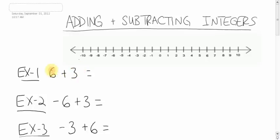So, the first number is where you start. So we're going to start at 6. The plus sign means we're going to go in the forward direction. 3 spots.